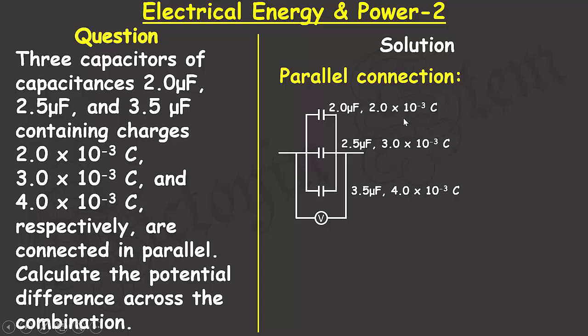respectively. And each of the capacitors have charges of 2 times 10 to the power of minus 3, 3 times 10 to the power of minus 3, and 4 times 10 to the power of minus 3 coulombs, each, respectively.